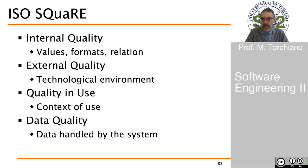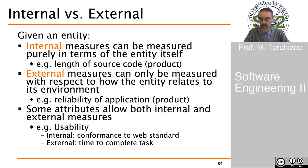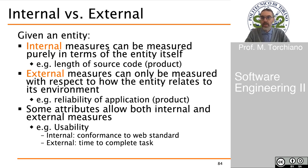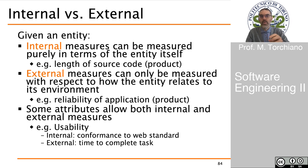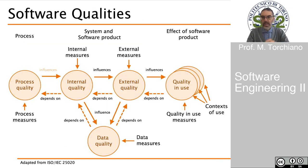It is important to distinguish very well between internal and external quality. Internal measures are typically those that can be performed just on the basis of the entity itself, while external measures require observing the entity working or interacting with its environment. For instance, an internal measure of usability could be compliance with a web standard — colors, text size, and so on — while an external measure could be the time to complete a task, where we observe the system used by a user and measure the time taken to complete the task.